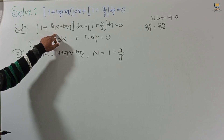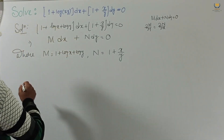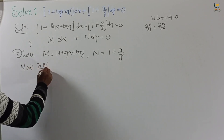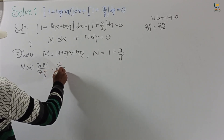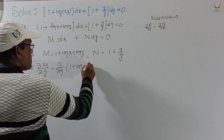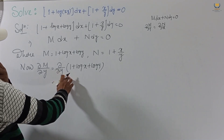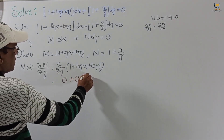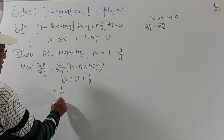This equation will be exact if ∂M/∂y equals ∂N/∂x. Now we find ∂M/∂y. Differentiating M = 1 + log x + log y partially with respect to y: the first two terms give 0, and log y gives 1/y. So ∂M/∂y equals 1/y.